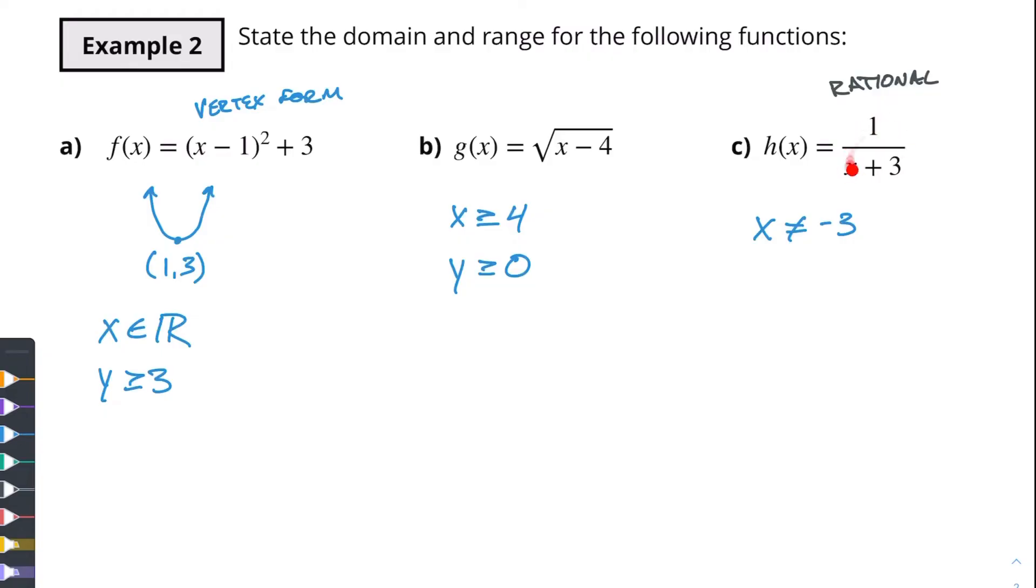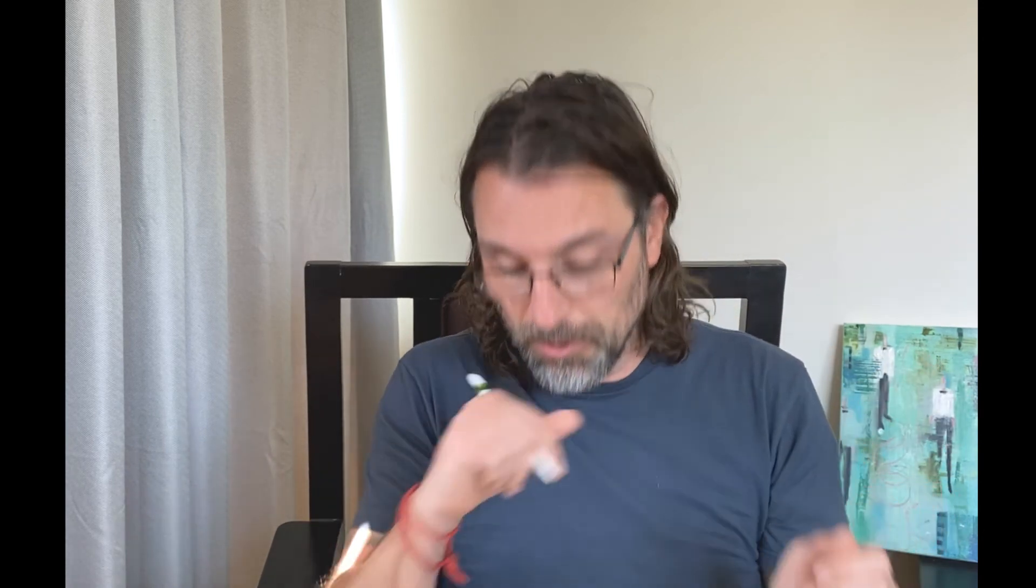Now what about our y value? When we spit out all of the different possible x values in here we can really get anything out except for 0. If you've got a really big denominator and a small numerator you're getting closer to 0. So let's say 1 over x is 10,000 plus 3. Well 1 over 10,003 is going to be approximately 0 and it's going to be a positive value. If we put in a really big negative number so maybe negative 10,000 plus 3 then we're going to have 1 over negative 9,997.